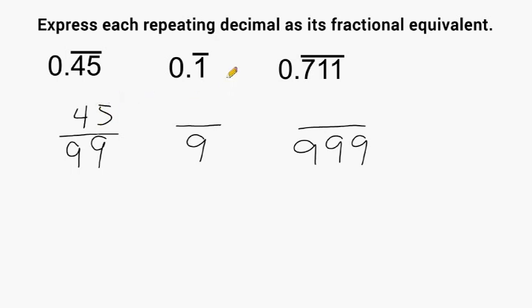This example right here has a one underneath the line, so we just write a one. And we take seven, one, one — or seven eleven — and write that as our numerator for this example.